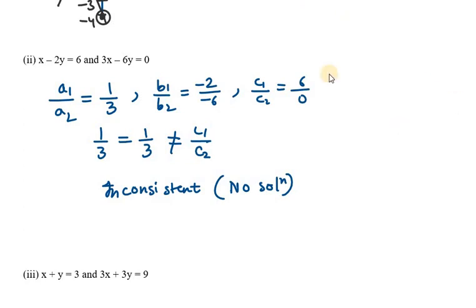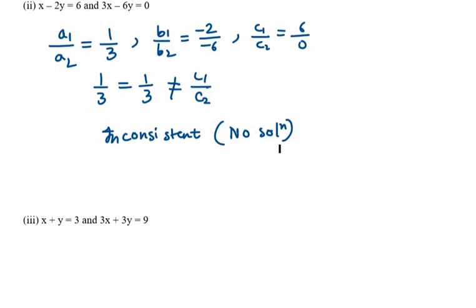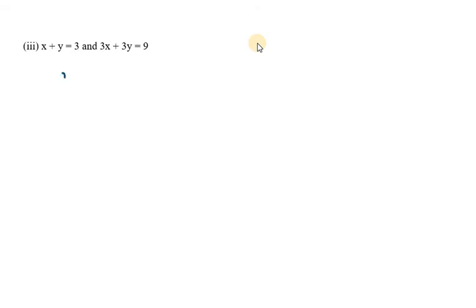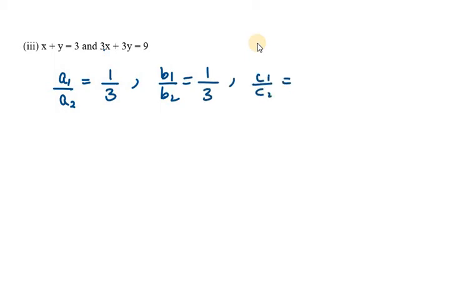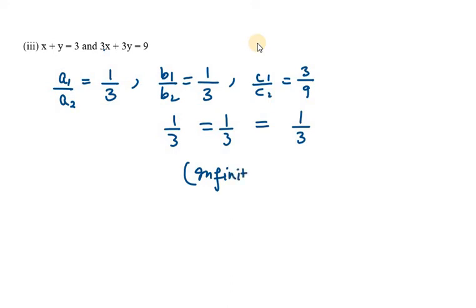Let's solve the third part. We have x plus y equals 3 and 3x plus 3y equals 9. a1 over a2 is 1 over 3, b1 over b2 is 1 over 3, and c1 over c2 is 3 over 9 which is also 1 over 3. All three ratios are the same, which means the system has infinitely many solutions, so the equations are consistent.